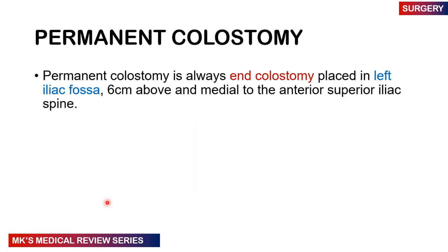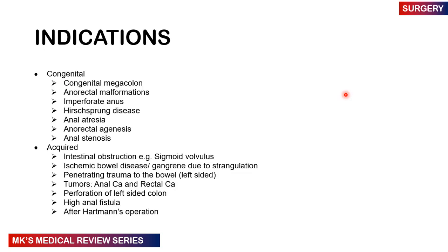Permanent colostomies are usually end colostomies placed in the left iliac fossa, about 6 centimeters above and 6 centimeters medial to the anterior superior iliac spine. Indications include congenital malformations such as congenital megacolon, anorectal malformations, imperforate anus, Hirschsprung's disease, anal atresia, anorectogenesis, and anal stenosis. Acquired indications include intestinal obstruction such as sigmoid volvulus, ischemic or gangrenous bowel due to strangulation, penetrating trauma to the bowel on the left side, tumors of the anal canal and rectum, perforation of the left colon, gunshot wounds, high anal fistulas, and after Hartmann's operation.